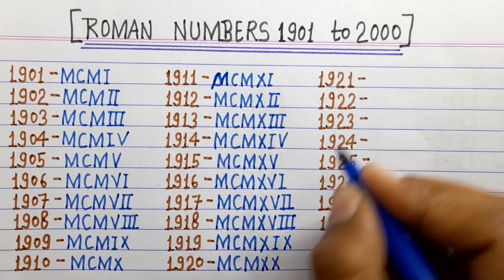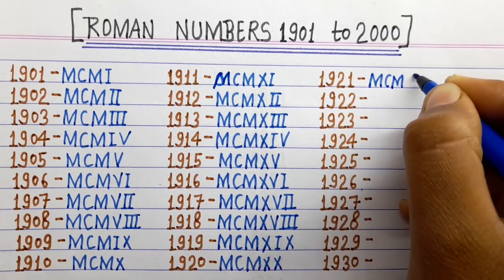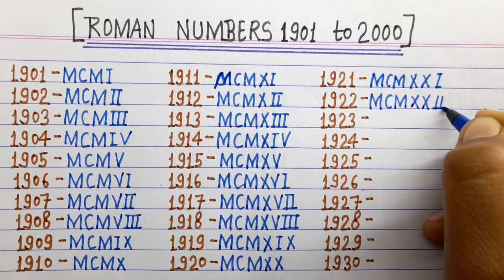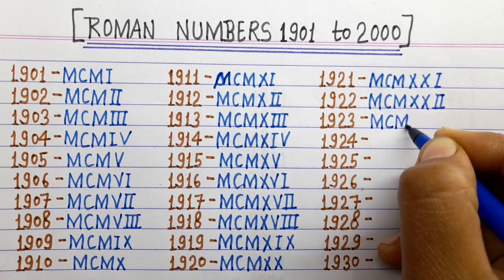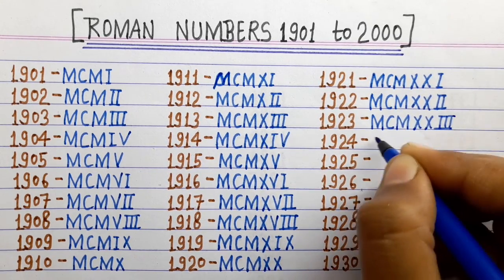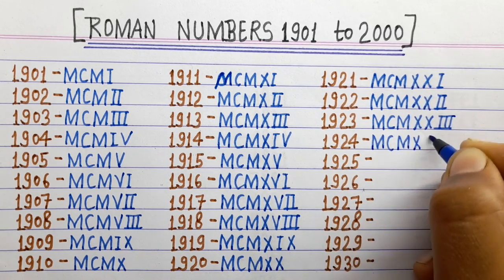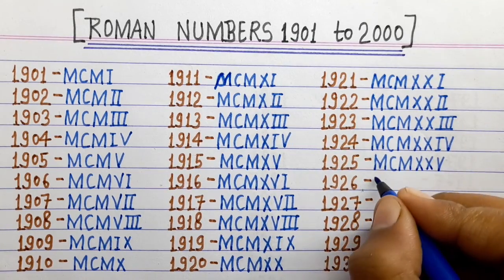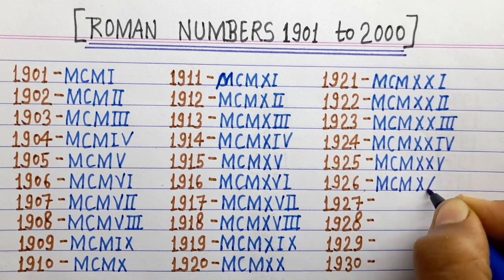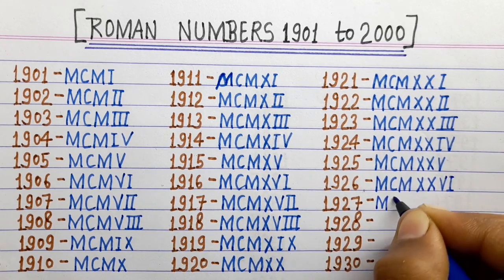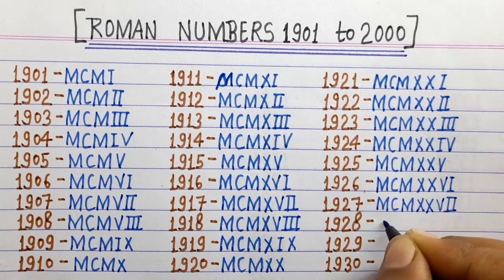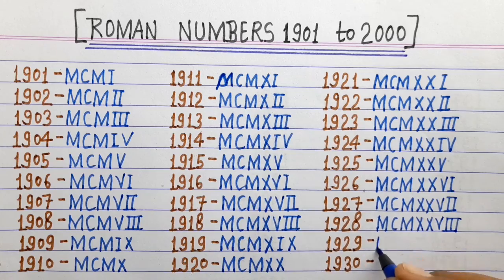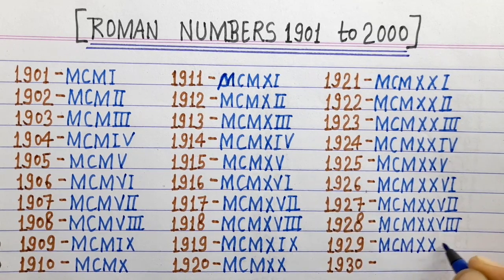1920 MCMXX, 1921 MCMXXI, 1922 MCMXXII, 1923 MCMXXIII, 1924 MCMXXIV, 1925 MCMXXV, 1926 MCMXXVI, 1927 MCMXXVII, 1929 MCMXXIX.